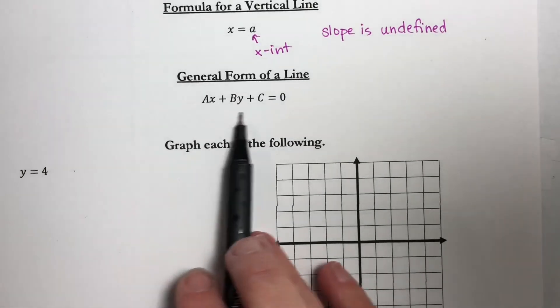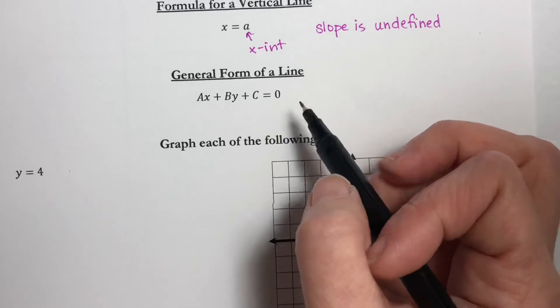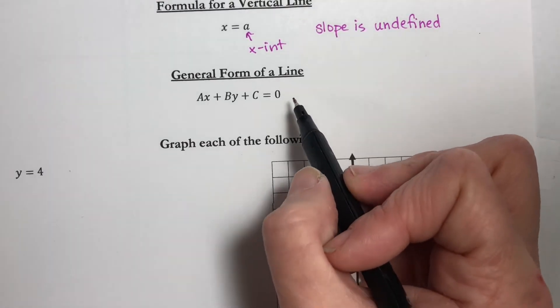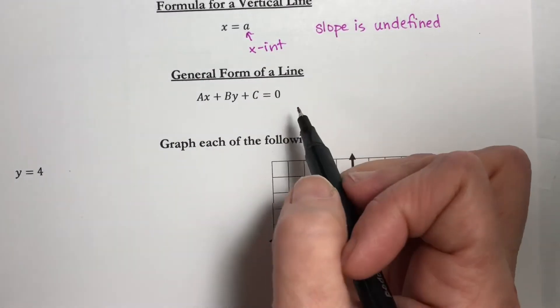And then what we have is general form of a line. If you took Math 330, Intermediate Algebra at Lee College, you learned what we called standard form of a line. This is different, but similar.